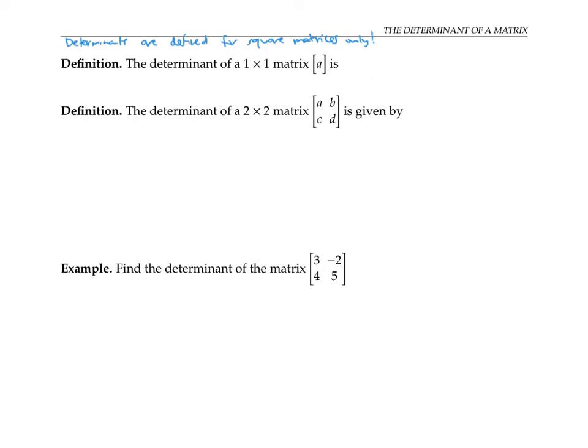People don't usually talk about the determinant of a one by one matrix — or one by one matrices at all. But if for some reason you needed to compute the determinant of a one by one matrix, a matrix with only one entry, then that determinant would just be the entry itself.